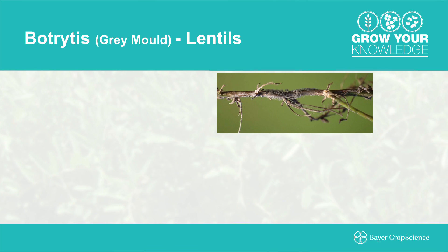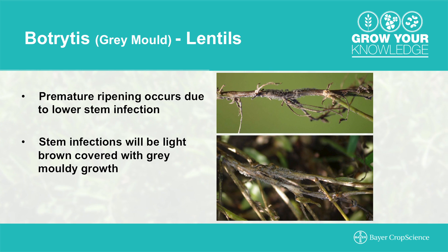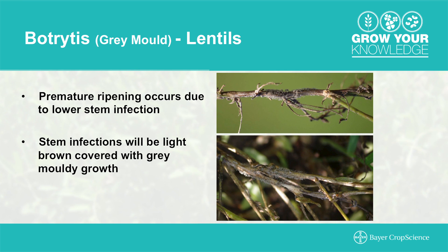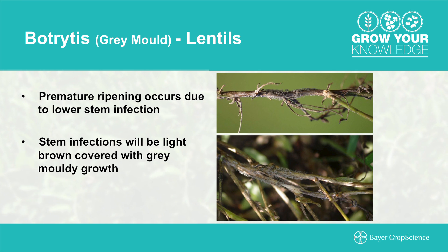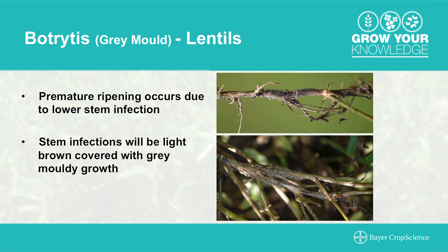Botrytis gray mold is a lentil disease characterized by premature ripening. Infections look brown with gray moldy growth on the surface of the plant. Infections start in petals and are transmitted to the pods — pods turn brown, don't fill and result in lost yield. Stem infections can also result in significant yield loss. Botrytis is prevalent in wet, cool weather. This disease can spread from infected crop stubble, wind-borne spores, or direct plant contact from infected plants in more dense canopies.